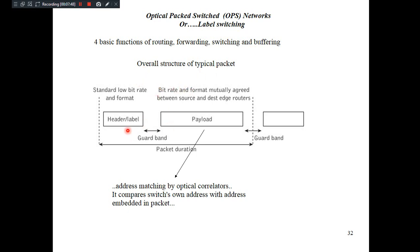A typical packet structure consists of a header or label, which tells the destination the packets should reach; a payload, which contains the data; and a guard band, provided to avoid overwriting between successive header and payload sections. One header and payload together give you one packet duration.